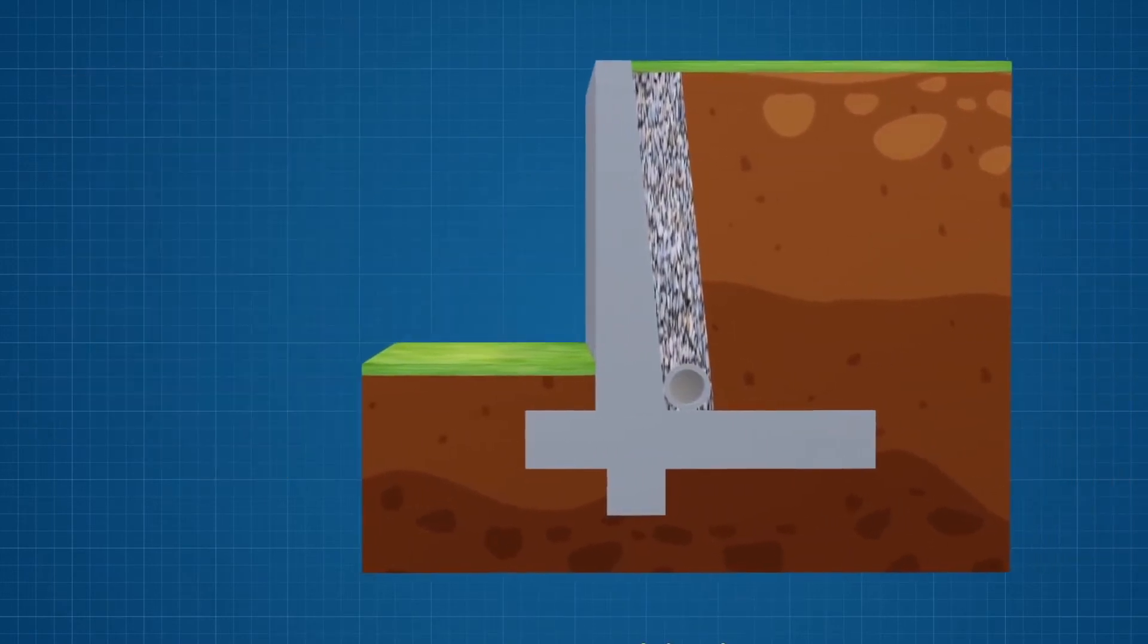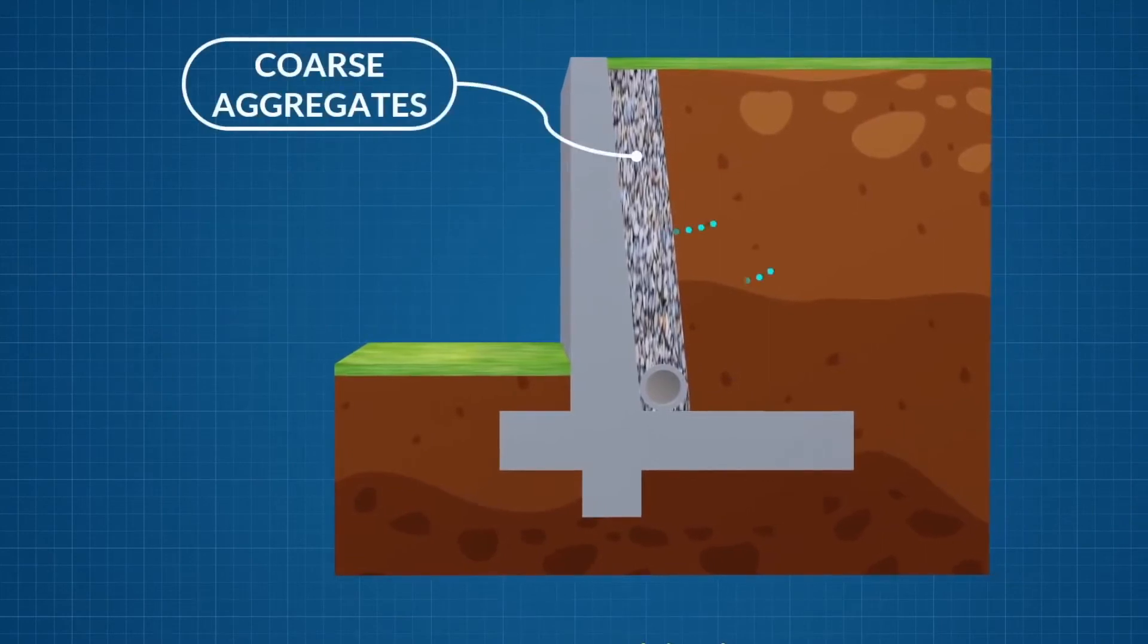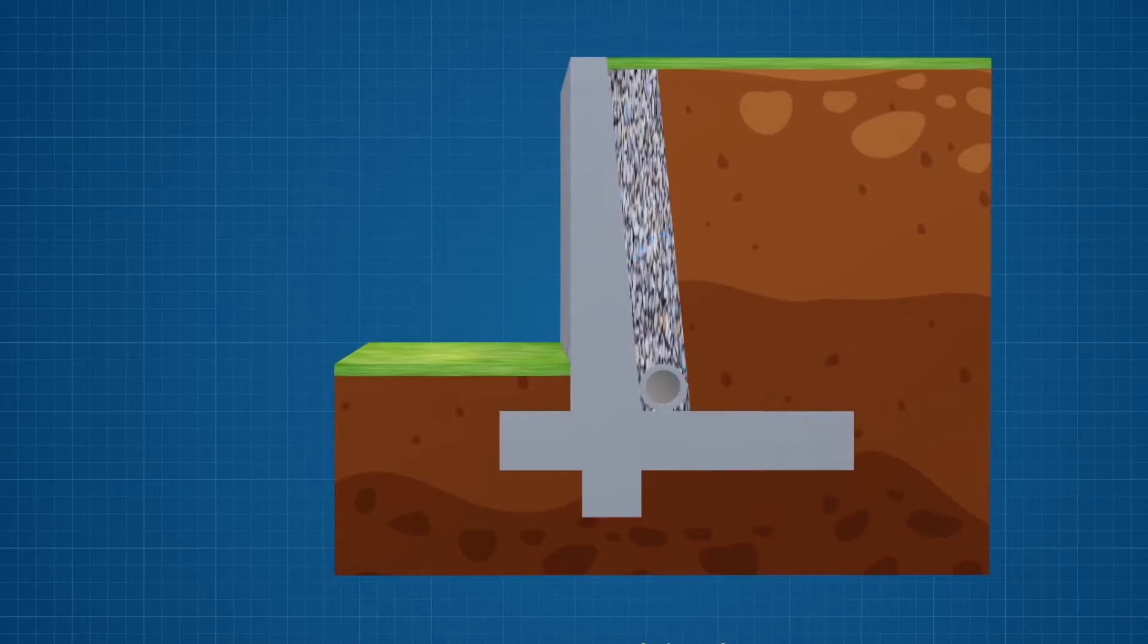Coarse aggregate can be added along the back of the wall. This allows water to flow down to the drain pipe. The wall surface in contact with the soil is typically treated with some form of waterproofing.